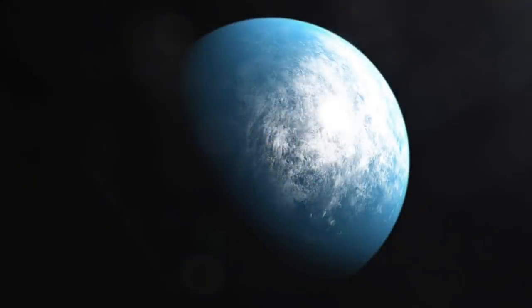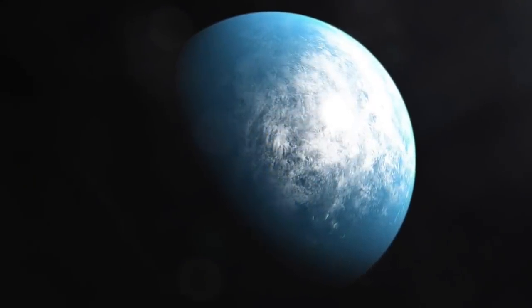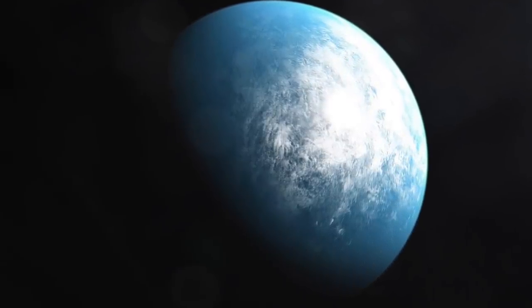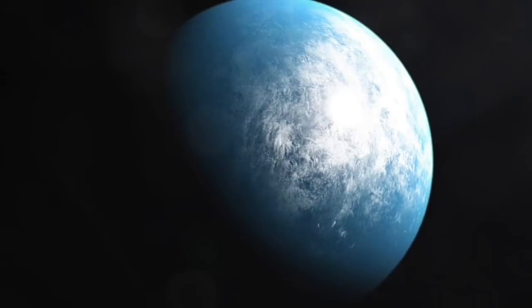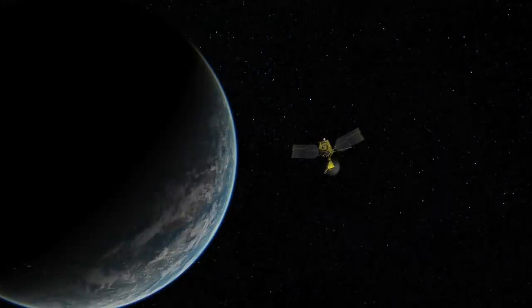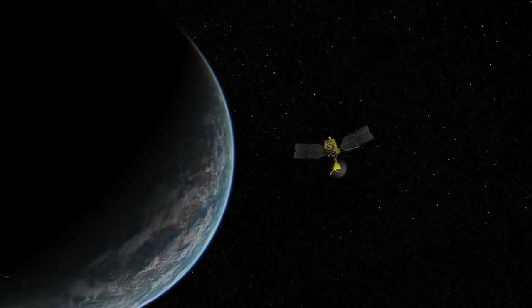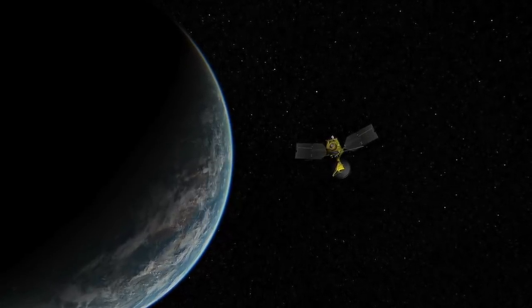This planet was discovered using NASA's Transiting Exoplanet Survey Satellite. This planet stood out to researchers because upon first glance it was very similar to Earth. In fact, it has a radius of 1.1 times that of Earth, and orbits within its habitable zone. This means that the planet could host life.